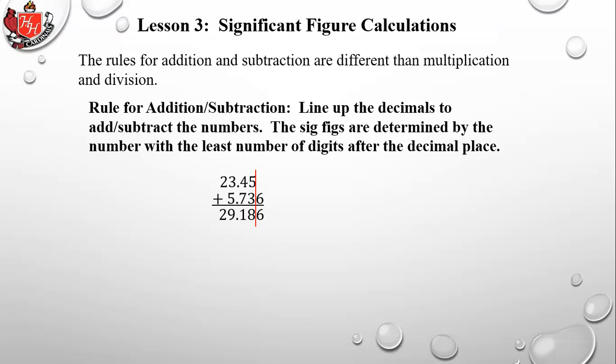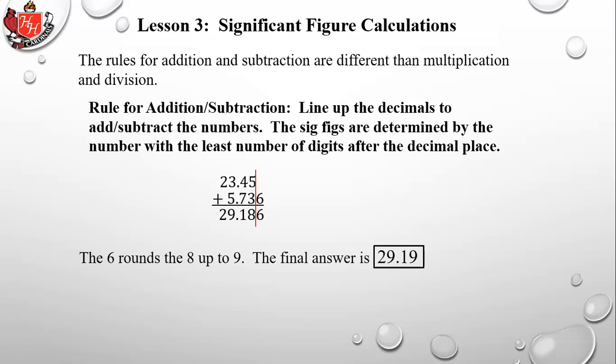The result is 29.19. The 8 in the sum must be rounded — since the next digit is 6, the 8 rounds up to 9. So the final answer is 29.19.